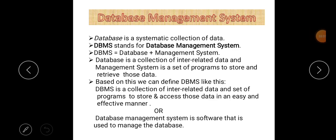Next is database. A database is nothing but the systematic collection of data. In simple words, we can say that interrelated data is called a database. For example, your phone book, which contains contact numbers and names of friends, is also called a database.